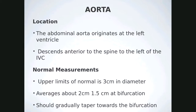A lot of this material is review — you should already know the location of the abdominal aorta. It originates at the left ventricle and descends anteriorly, anterior to the spine and to the left of the IVC. The upper limits of normal is 3 centimeters; exceeding that is considered an aneurysm. The average diameter is about 2 centimeters, tapering down to about 1.5 centimeters at the iliacs.